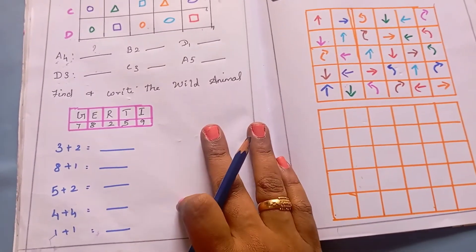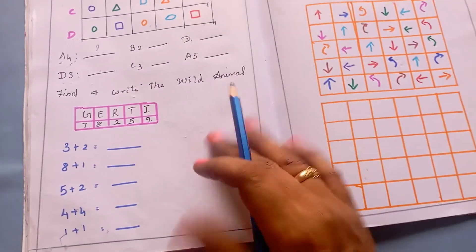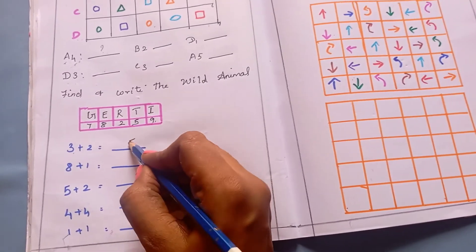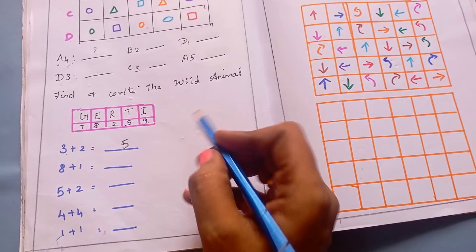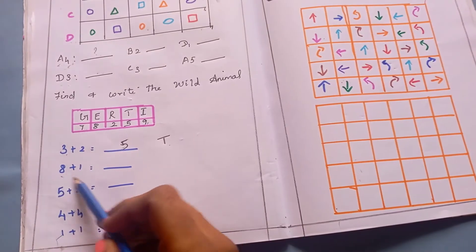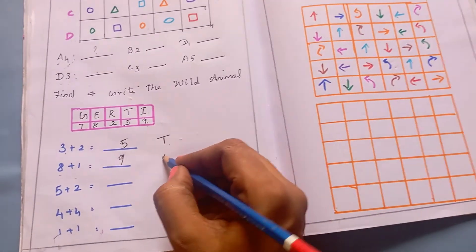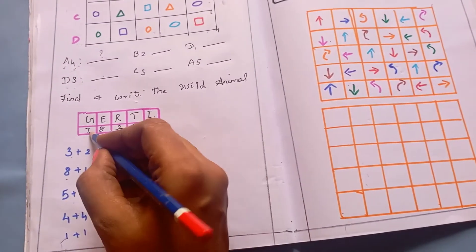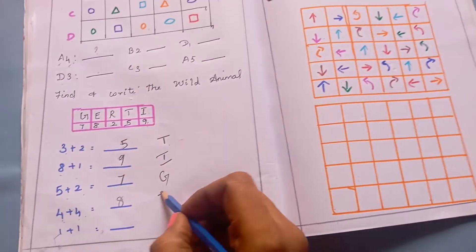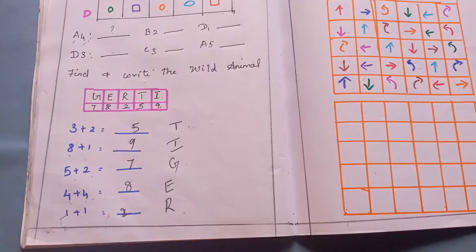The next worksheet is: find and write the wild animal using a code. You can see letters assigned to numbers. You solve addition problems to get the code number, then find the corresponding letter. For example: 3 plus 2 is 5, and 5 is the letter T. Then 8 plus 1 is 9, and 9 is I. Then 5 plus 2 is 7, and 7 is G. Then 4 plus 4 is 8, and 8 is E. Then 1 plus 1 is 2, and 2 is R. So the decoded animal name is TIGER.